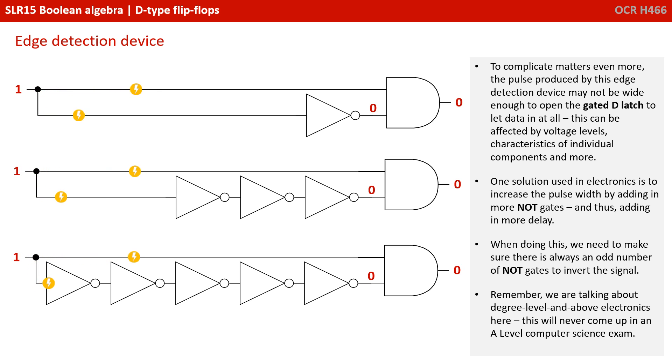To complicate matters even more, the pulse produced by this edge detection device may not be wide enough to open the gated D latch to let data in at all. This can be affected by voltage levels and characteristics of the individual electronic components. One solution used in electronics is to simply increase the pulse width by adding in more NOT gates and thus adding in more delay. When doing this, we need to make sure there's always an odd number of NOT gates to invert the signal.